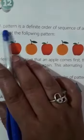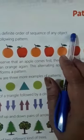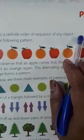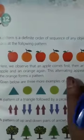So what do you mean by patterns? A pattern is a definite order of sequence of any object. Means kisi bhi object ko ek definite sequence me, ek nishchit kram me rakhna. That is called pattern.